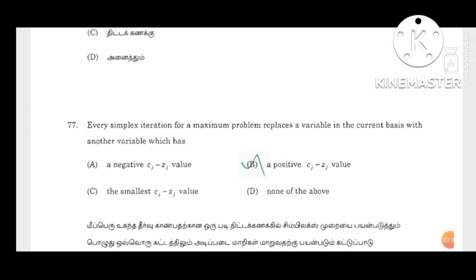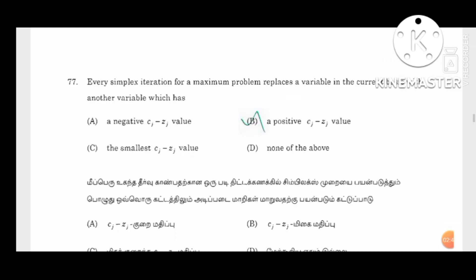Every simplex iteration for the maximum problem: replace the variable in the current basis with another variable which has the positive Cj minus Zj value.